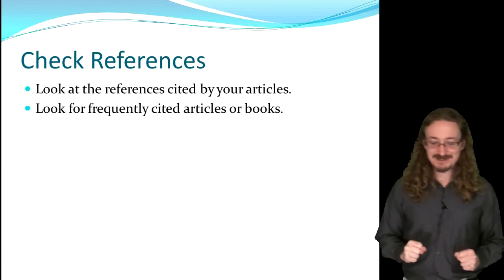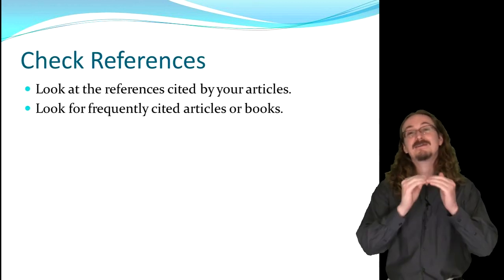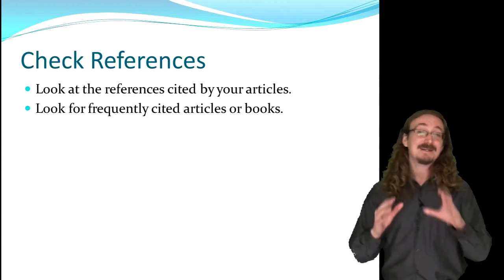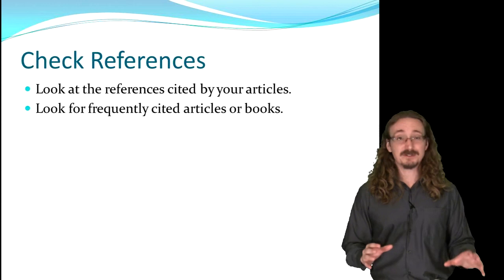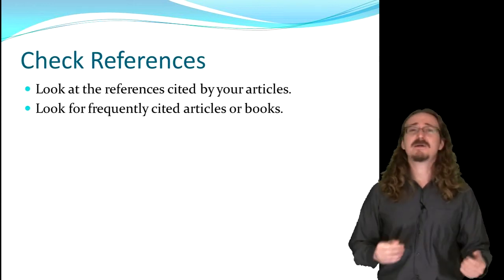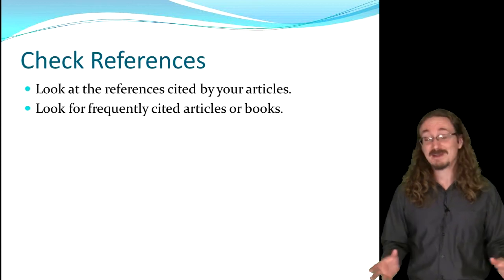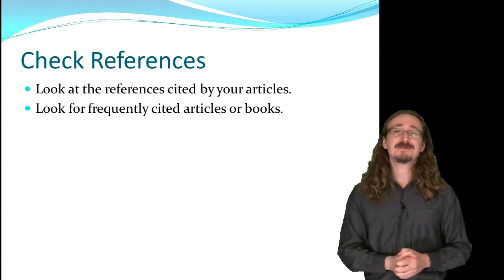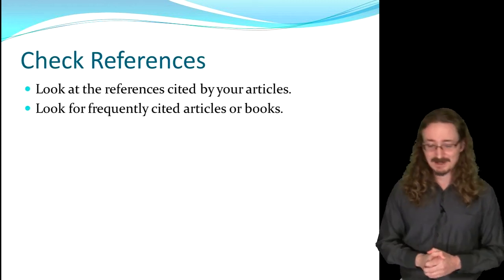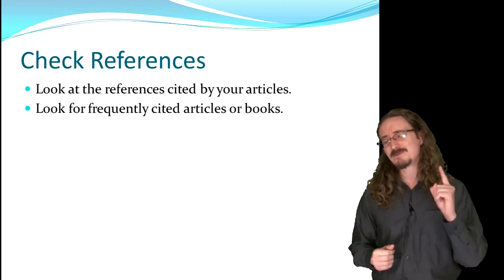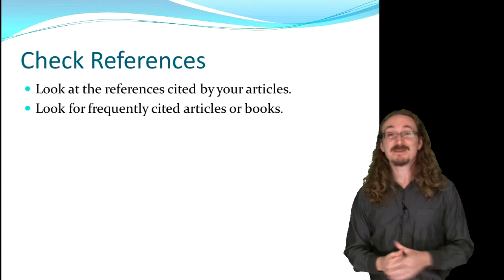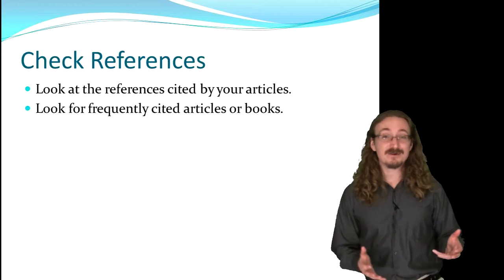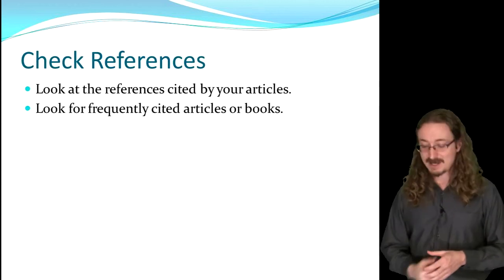Another great way to find sources is to check the references of a good article you've already found. They'll have a works cited or bibliography, and you're free to use their research. Look for those cited articles — they'll have their own references too, so pretty soon you'll have hundreds of possible articles. If you only find one really good, up-to-date source, you'll already have a lot of the research done. You can also look for frequently cited articles or books on the topic, which I'll show in the database.